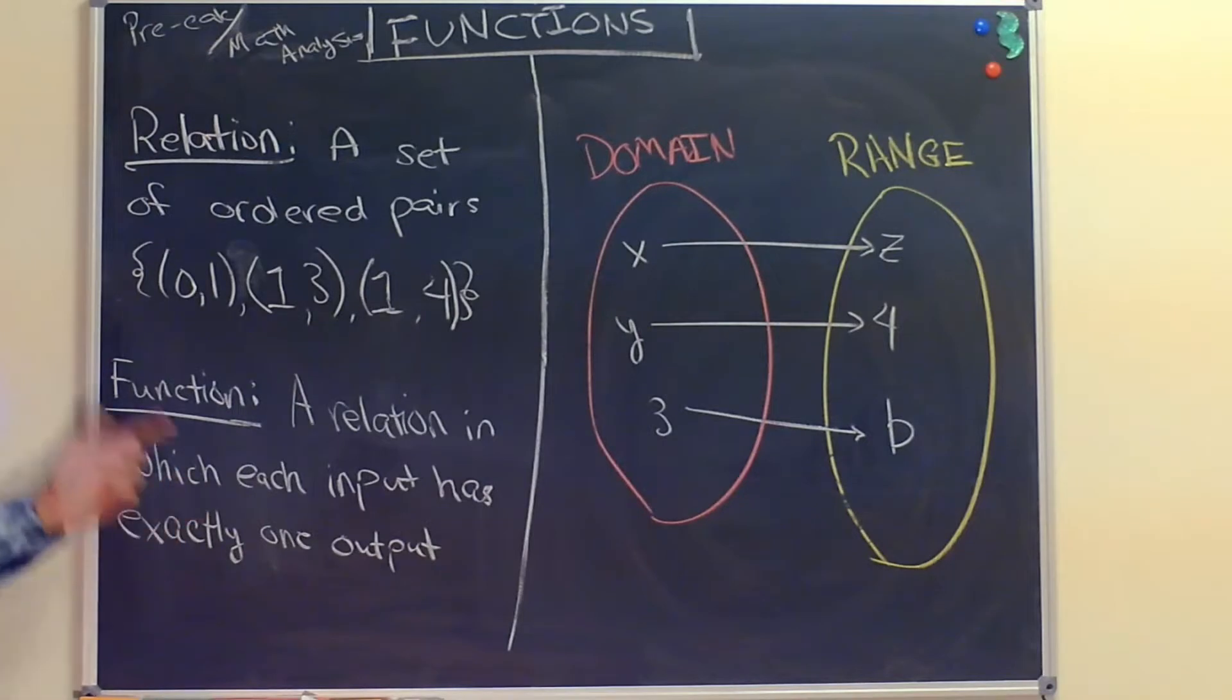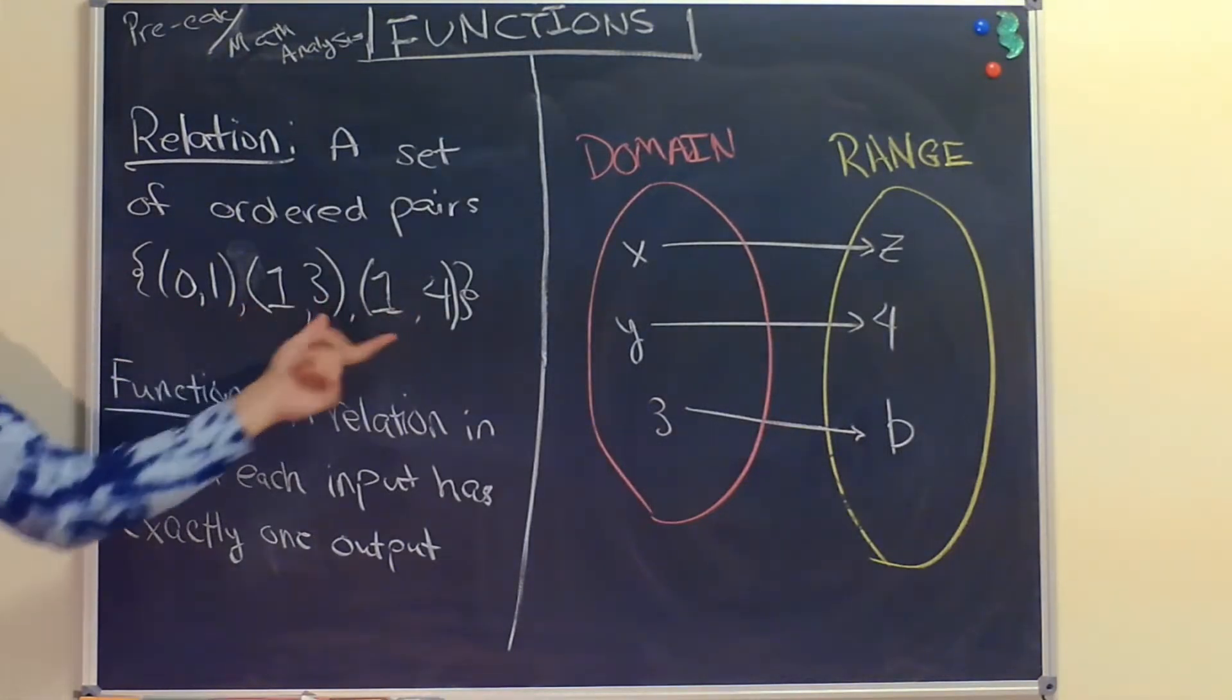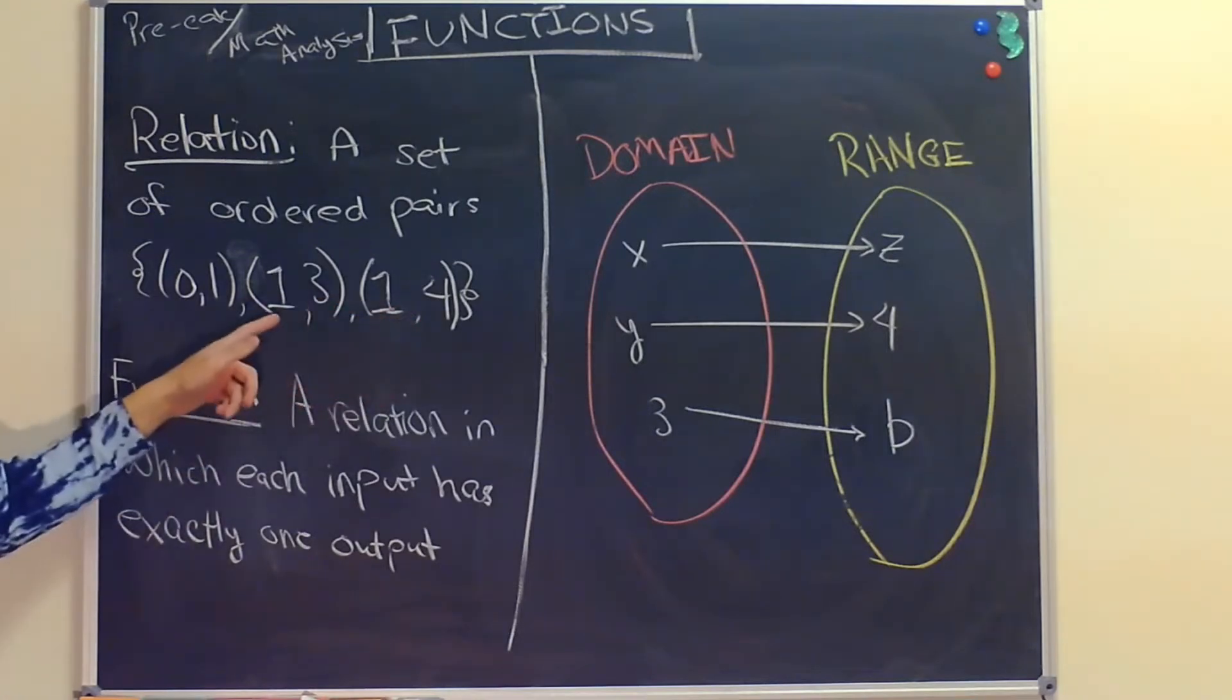A function is a relation in which each input has exactly one output. This relation is not a function because it has one output for zero (which is one), but it has two outputs (three and four) for input one.